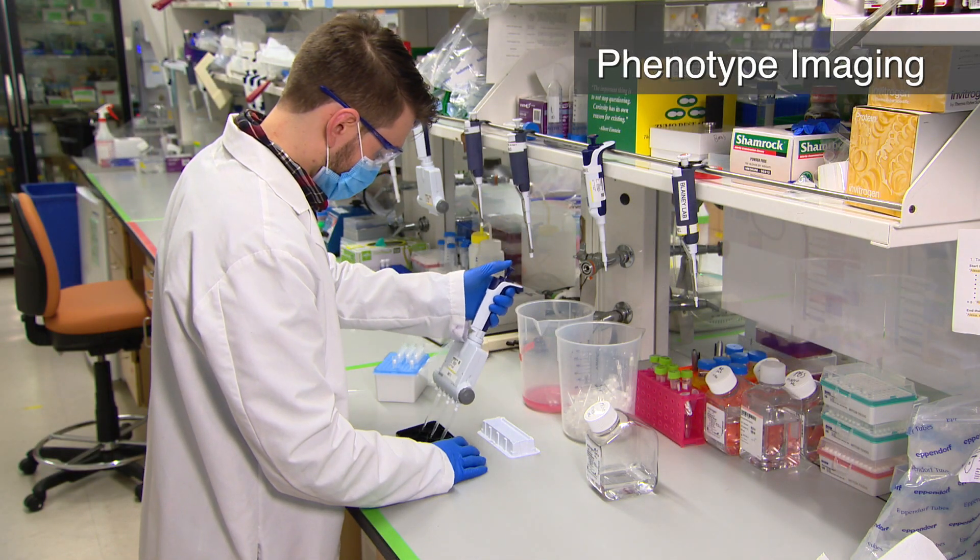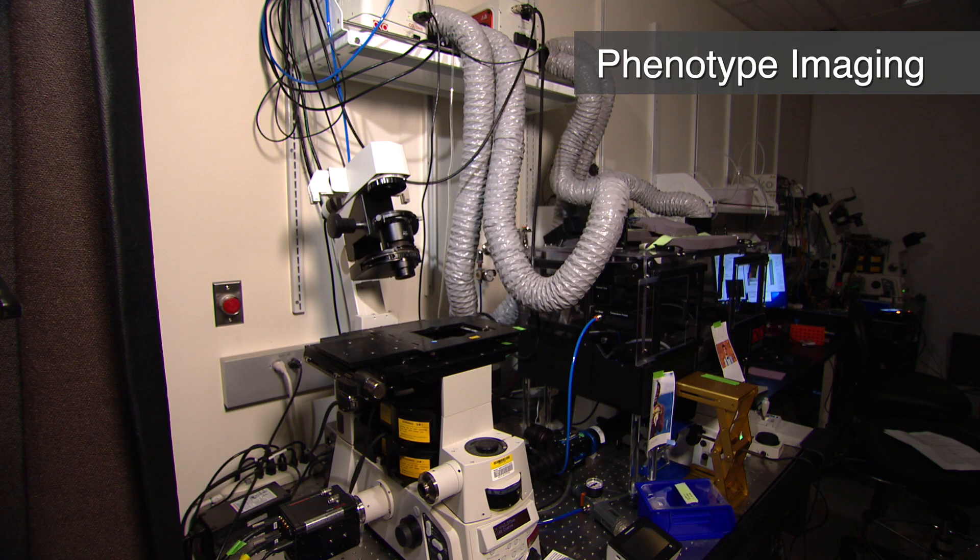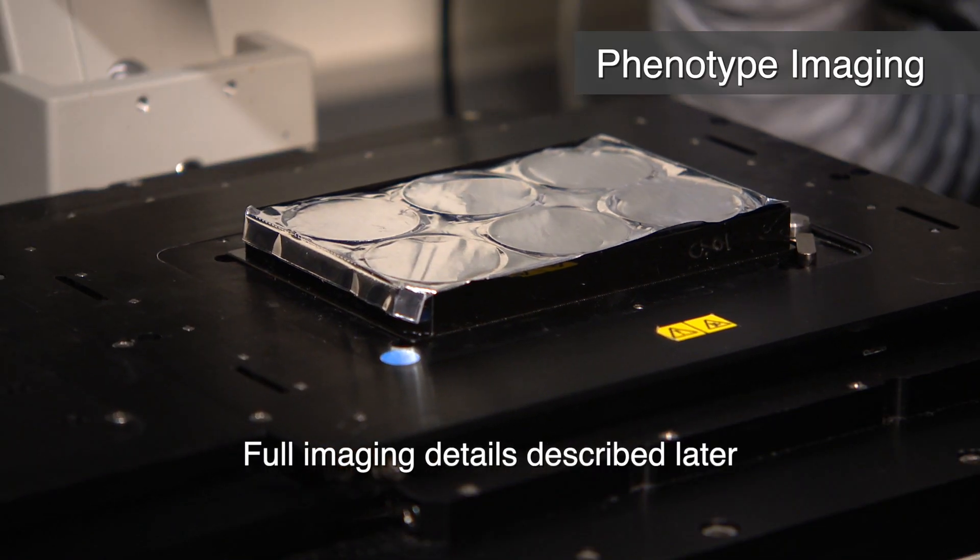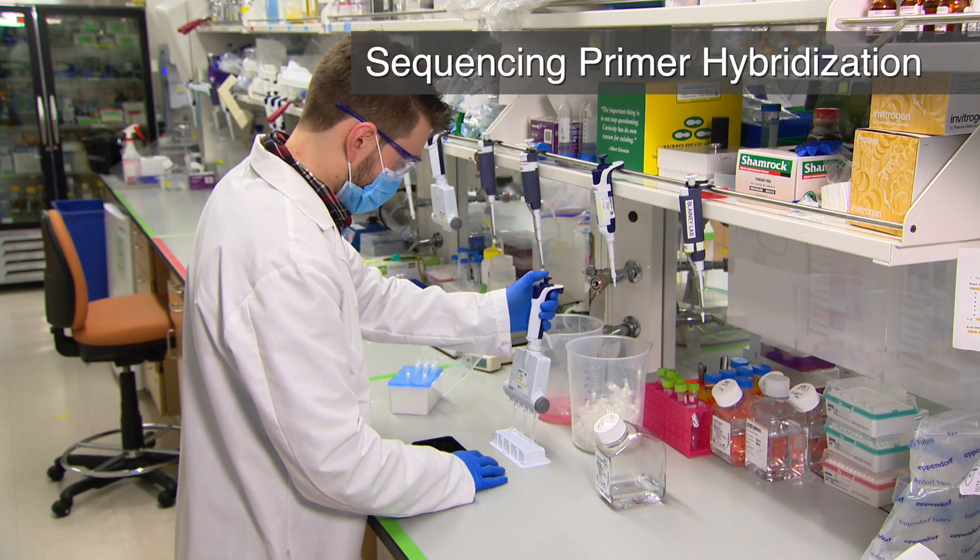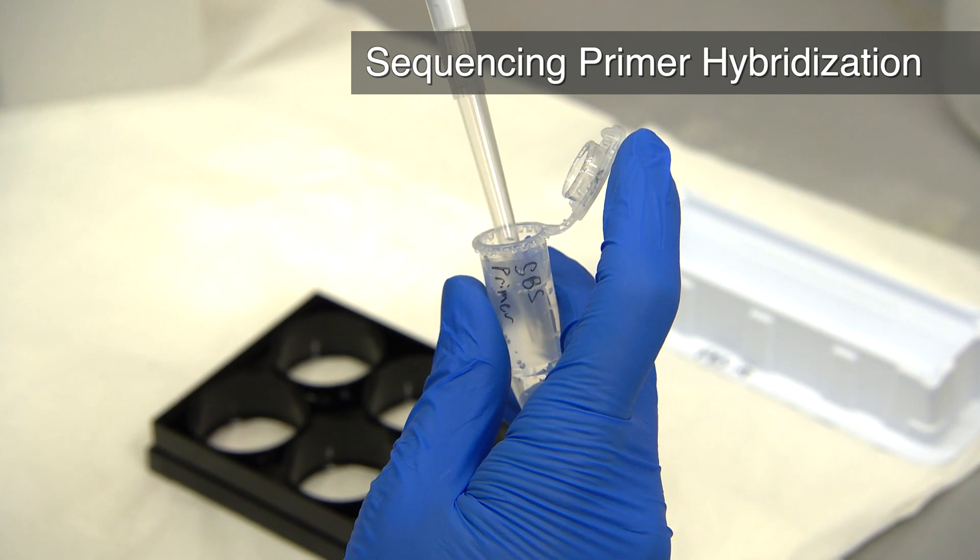The next day, wash 3 times with PBS-T and add 2 milliliters of DAPI solution. Perform phenotype imaging on a high-throughput screening microscope. After imaging, wash the plate 3 times with PBS-T. The sample is now ready for sequencing.